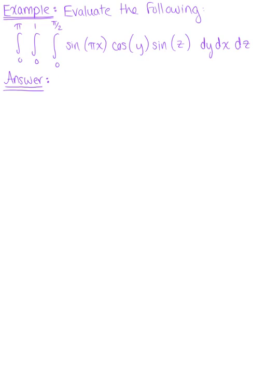Evaluate the following triple integral. Looking at this triple integral, we observe that we have constant bounds. So we can rewrite this big triple integral as the product of three individual integrals — we can only do this because we have constant bounds.